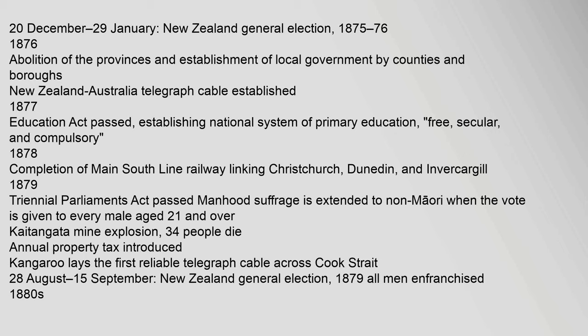1878: Completion of the Main South Line railway linking Christchurch, Dunedin and Invercargill. 1879: Triennial Parliaments Act passed. Manhood suffrage is extended to non-Maori when the vote is given to every male aged 21 and over. Kaitangata mine explosion — 34 people die. Annual property tax introduced. Kangaroo lays the first reliable telegraph cable across Cook Strait.